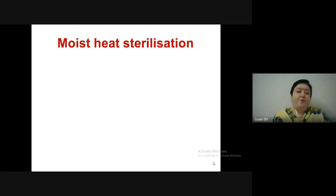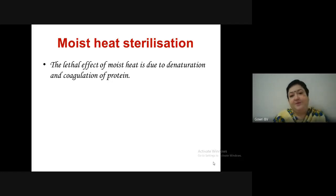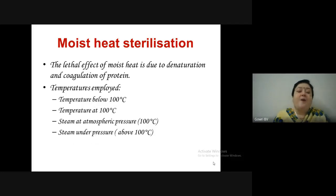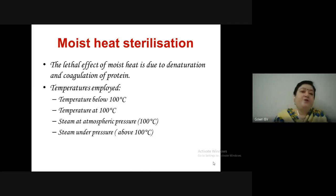Moist heat sterilization kills organisms by denaturation and coagulation of protein. Four temperature ranges are employed: below 100°C, at 100°C (steam at atmospheric pressure), and steam under pressure (above 100°C).